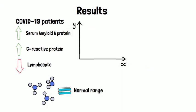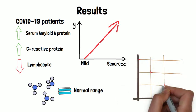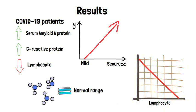In the cases where the disease progressed from mild to severe, serum amyloid A and C-reactive protein levels increased, while lymphocyte levels decreased.